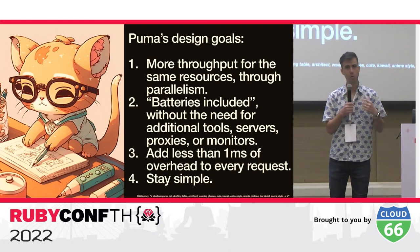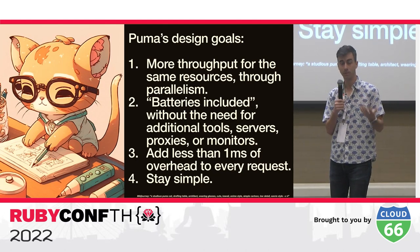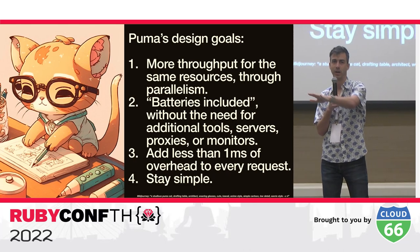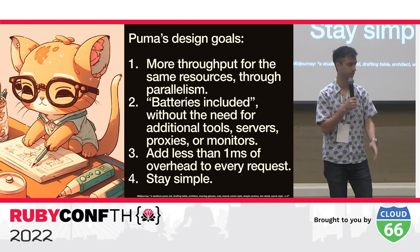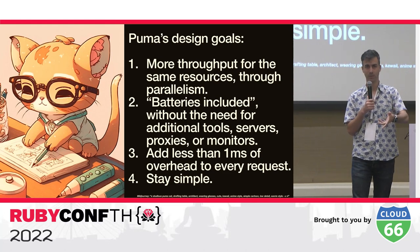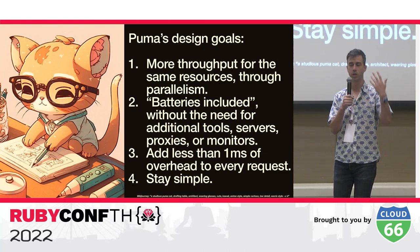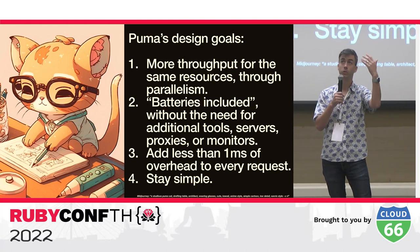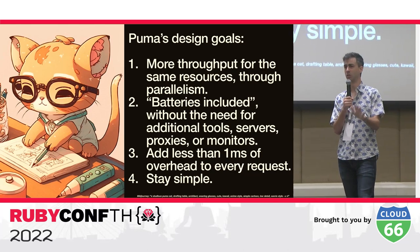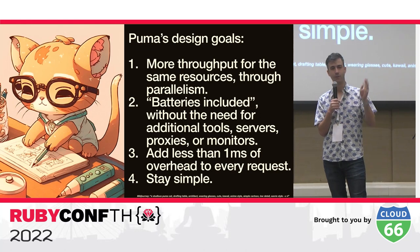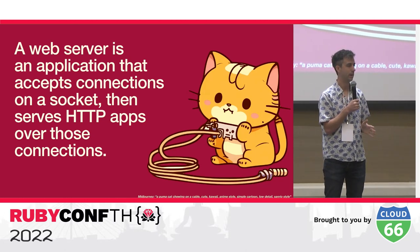Puma was designed as the web server for the Rubinius project — an old Ruby implementation by Evan that had no global VM lock, meaning Ruby could run in parallel. He needed a web server to show off his parallel Ruby implementation. So parallelism was core. Second, batteries included — just start Puma and be ready to go. Third, add less than a millisecond of overhead per request. Fourth, stay small and simple — not tens of thousands of lines of code.